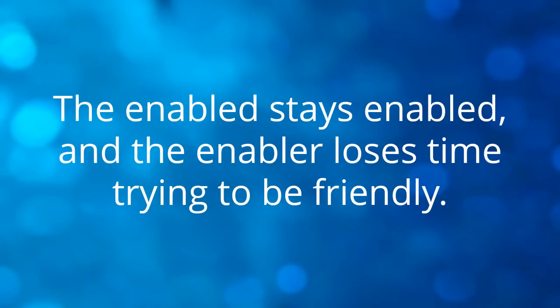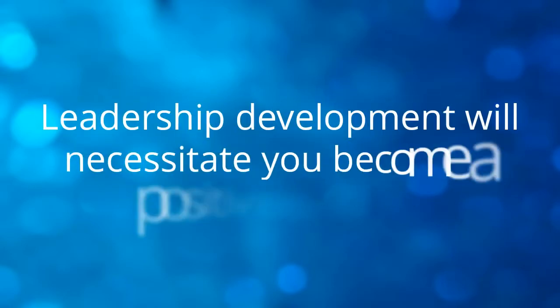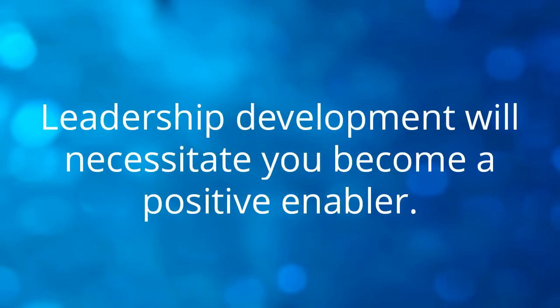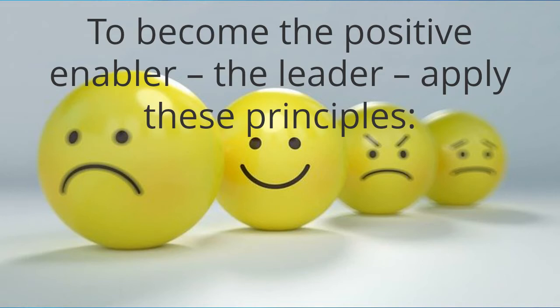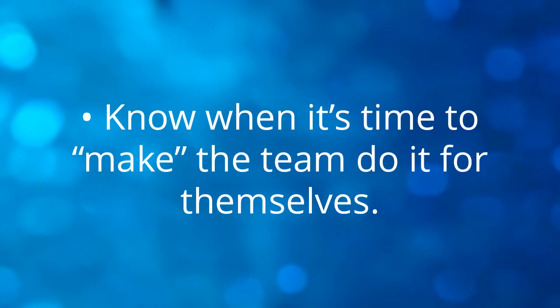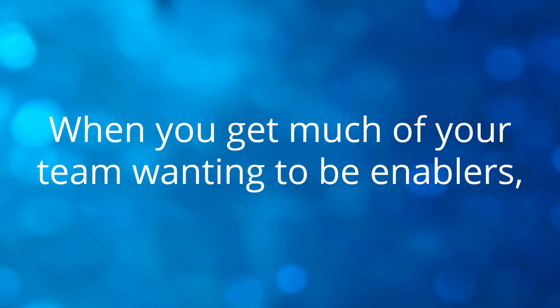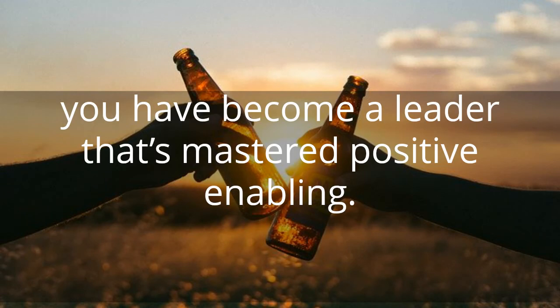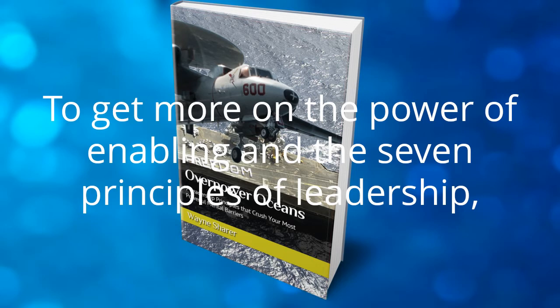The enabled stays enabled and the enabler loses time trying to be friendly. Leadership development will necessitate you become a positive enabler. To become the positive enabler, the leader applies these principles: train your team — every minute of focused training is worth the efficiency it gains for the future; demonstrate tasks to your team; know when it's time to make the team do it for themselves. When you get much of your team wanting to be the enablers, you have become a leader that mastered positive enabling.